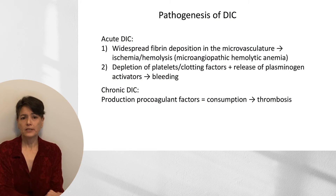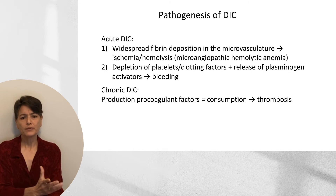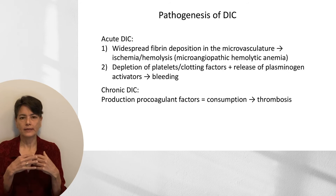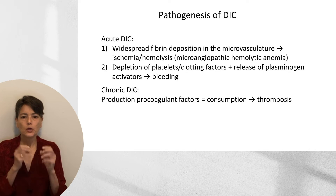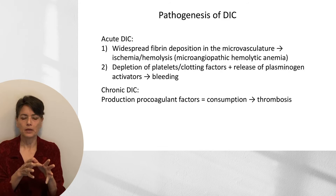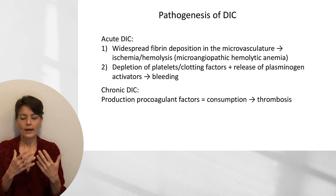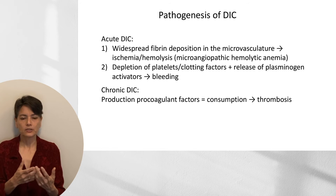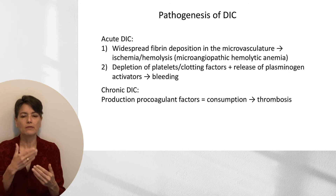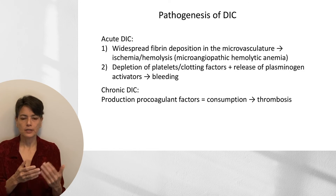That's the pathogenesis of acute DIC. Now let's focus on chronic DIC — why do we see thrombosis instead of bleeding? In acute DIC, such as an amniotic fluid embolism, a procoagulant factor is released and then stops. With chronic DIC, a tumor continually releases these procoagulant factors without stopping, feeding the loop. So although you have consumption, you also have continued production, which can drive you towards thrombosis.